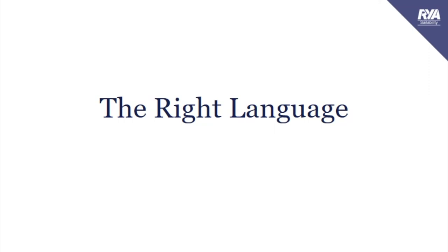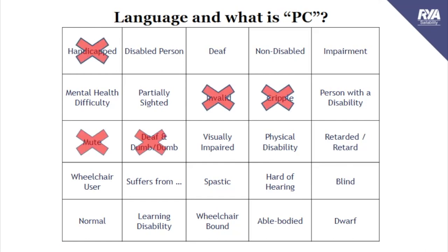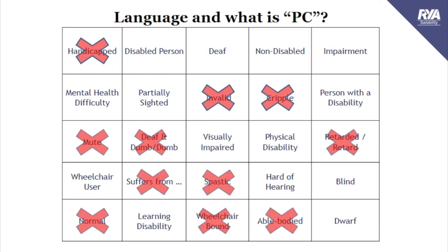First, we're going to look at the right language to use. This is a slide many of you will be familiar with — we use it in our Disability Awareness Training. It has lots of words written in various boxes. As I press the button, crosses appear in words that are seen as unacceptable, and smiley faces appear in words that are acceptable. This slide was written by Jess Cook from the Activity Alliance — this is their take on what might be acceptable in the use of language.